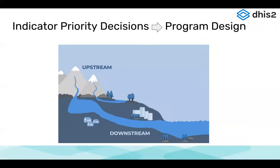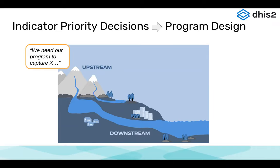We're bringing this up now at an early stage of the configuration academy, as we've just talked about the data model, because we really see that there are a lot of decisions made upstream about indicator priorities that really affect program design and the types of data available to use downstream. So six to twelve months after you've launched your tracker program and you're reviewing the data in your system, you might see there are some missing gaps that you can't go back and course correct. For example, upstream you make the decision that your program needs to capture TB clinical visits and laboratory results, so you might just say we need two repeatable program stages.